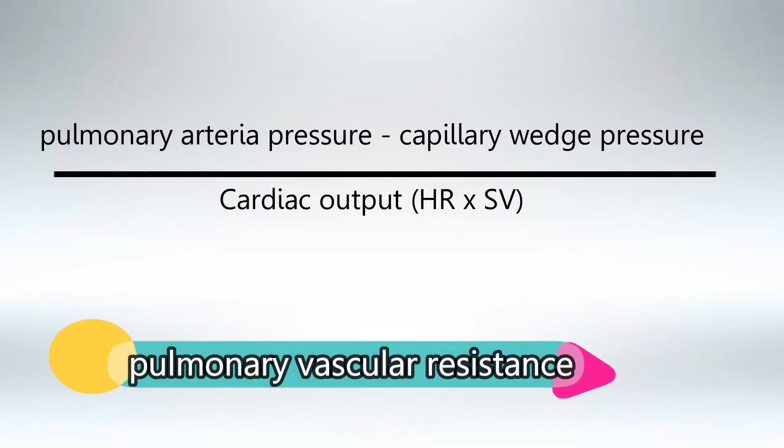To calculate pulmonary vascular resistance, calculate pulmonary arterial pressure minus capillary wedge pressure over cardiac output.